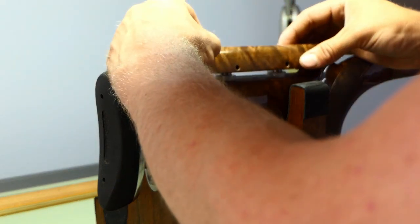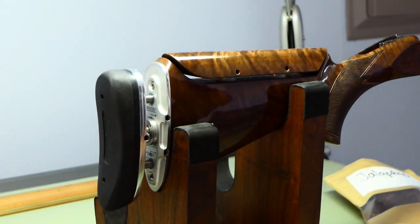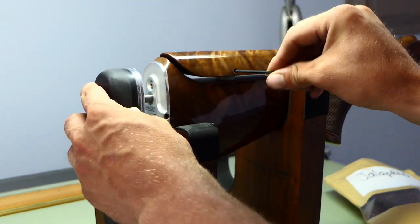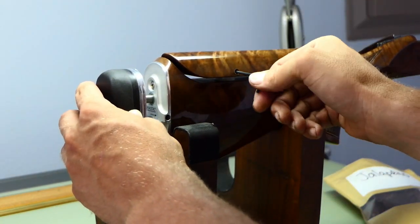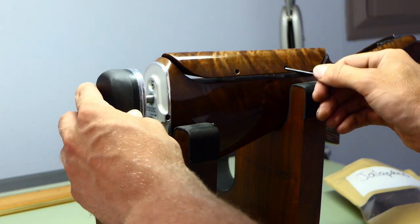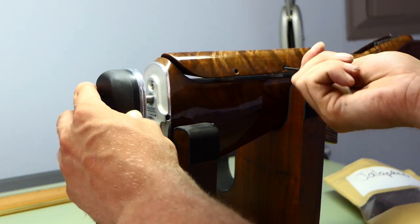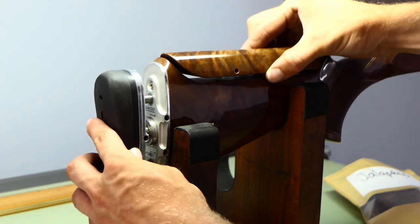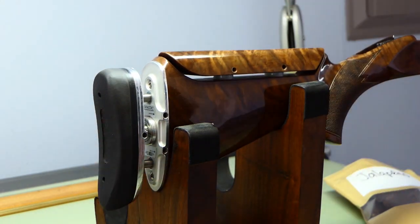Place my comb back on top and then tighten that securely in place with my 3/32nd Allen wrench. As you can see that's well secured and I'm ready to shoot.